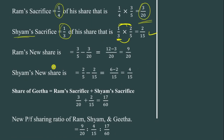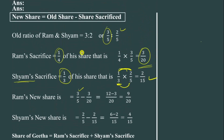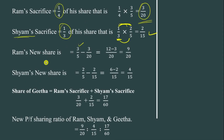Next we find the new share of Ram and Sham using the formula: New Share = Old Share − Share Sacrificed. Ram's new share = 3/5 − 3/20. Sham's new share = 2/5 − 2/15. We'll now calculate the mathematical part using the shortcut method.